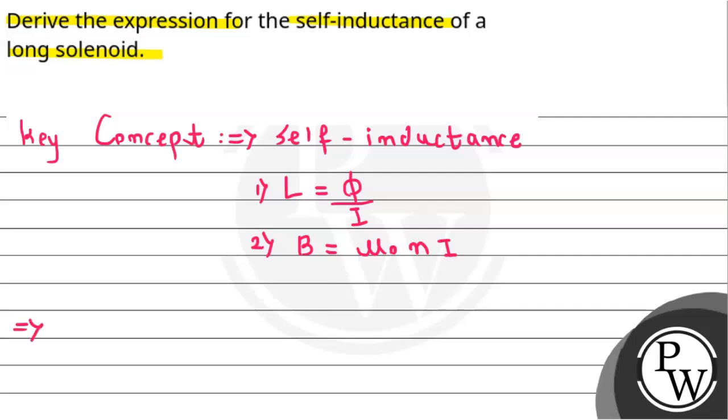Basically, we have to find total number of turns. It must equal the number of turns per unit length multiplied by the total length of the solenoid. That is, the total number of turns in the solenoid will be capital N.